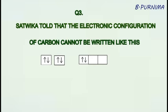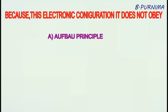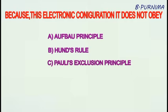Sattvika told that the electronic configuration of carbon cannot be written like this. Why? Because this electronic configuration does not obey: A. AFPA principle, B. Hund's rule, C. Pauli's exclusion principle, D. All of the above.